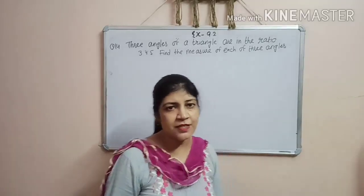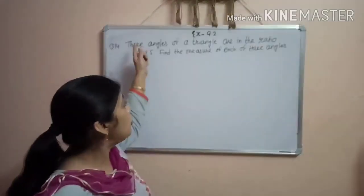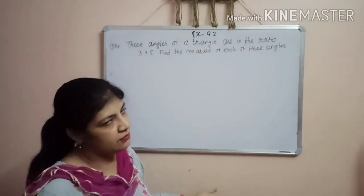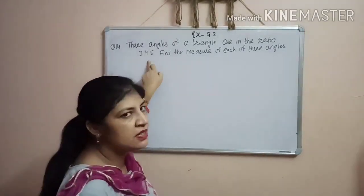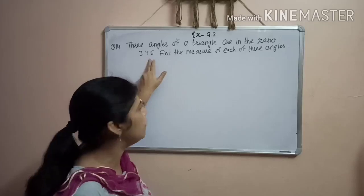Now, next question is question number 14. Three angles of a triangle - you know, there are 3 angles in a triangle and the ratio is given. The ratio is 3 is to 4 is to 5.